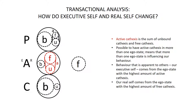The sum of unbound cathexis and free cathexis is known as active cathexis. It is possible to have active cathexis in more than one ego state, meaning that more than one ego state is influencing our behavior. However, the behavior that is apparent to others — our executive self — comes from the ego state with the highest amount of active cathexis. Our real self, on the other hand, comes from the ego state with the highest amount of free cathexis.